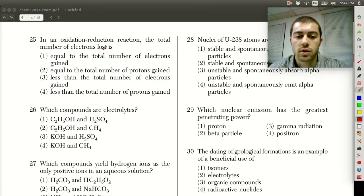Looking at question 25, in a redox reaction, the total number of electrons is what? The total number of electrons in a redox reaction is going to be equal to the number of electrons gained. This is kind of a shoot-off of the law of conservation of mass.